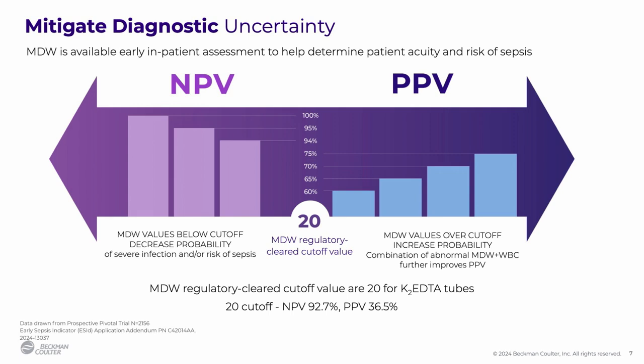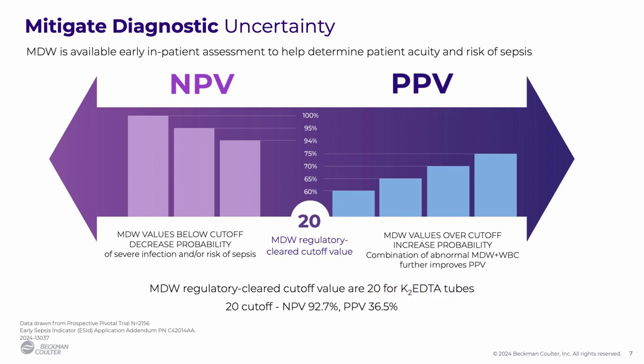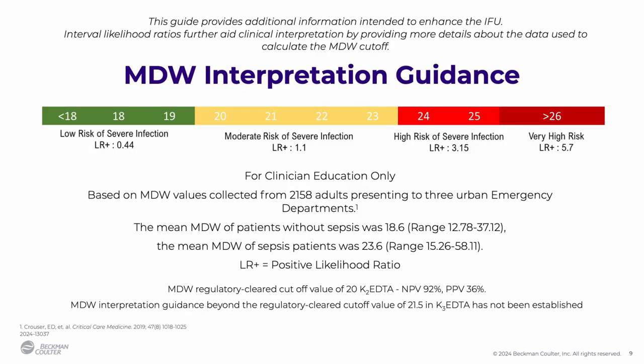MDW is not intended to rule in or rule out sepsis. An MDW value greater than or equal to 20, in combination with patient history, other lab values, screening tools, and your clinical judgment, supports putting that patient on an infection-oriented care pathway. An MDW value below 20 is interpreted as lower probability of severe infection or sepsis. For the purposes of clinical interpretation, it may be helpful to consider likelihood intervals, which indicate how many times more likely a patient is to have or develop sepsis based on MDW value.